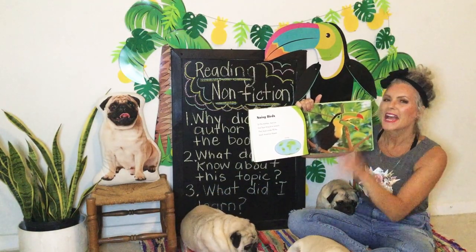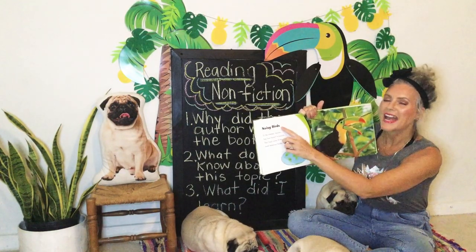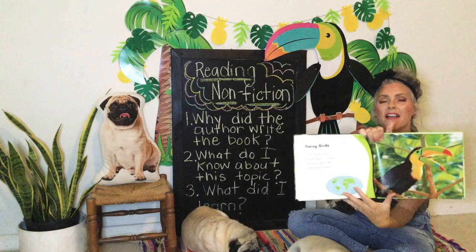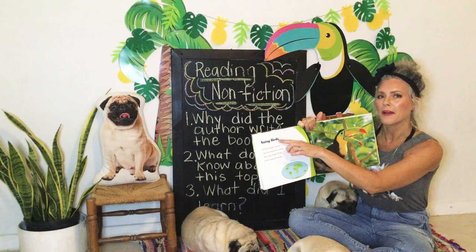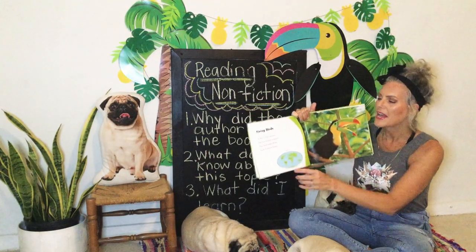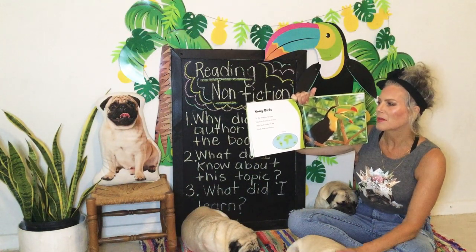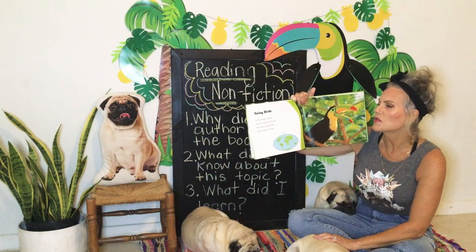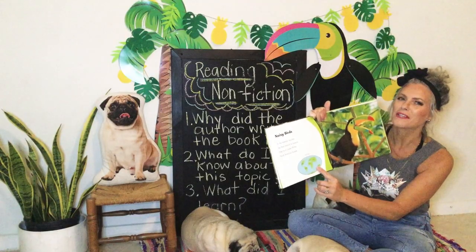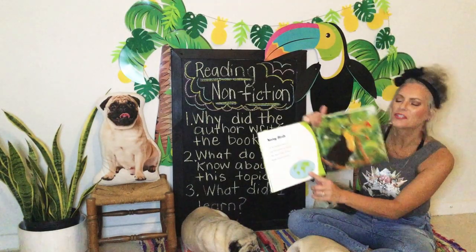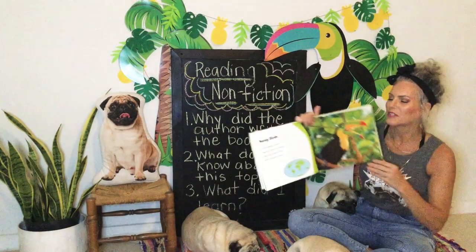Noisy Birds — and this is another nonfiction text feature called a heading. You can see how big it is; that's telling you what the group of words I'm going to read is going to be about. In the treetops, toucans hop from branch to branch. Their loud croaks fill the South American forest. Here is a map showing us where South America is and where the toucans live — that's another nonfiction text feature.